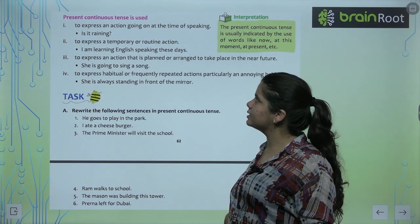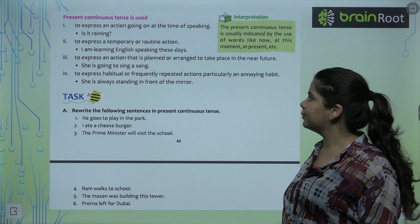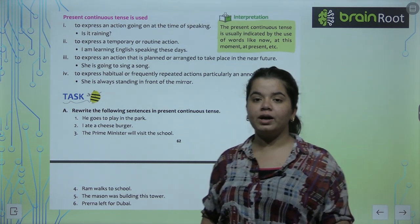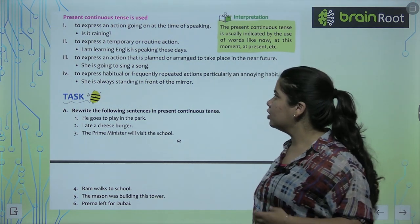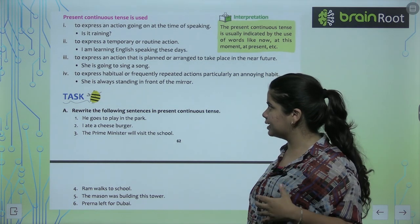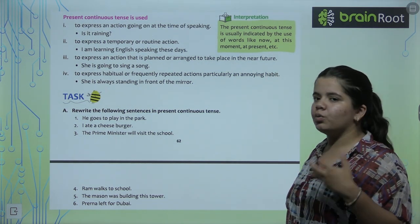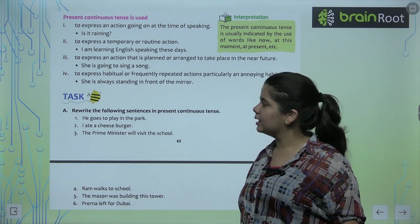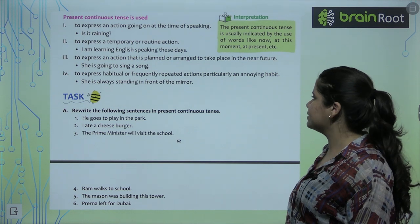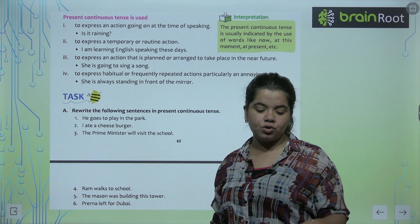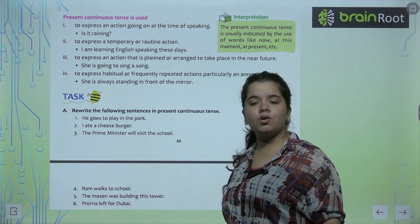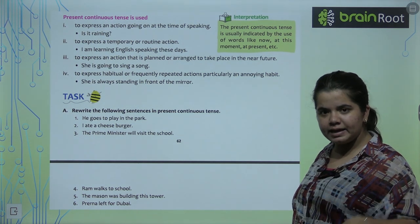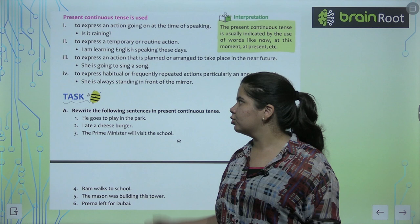To express a temporary routine action. First of all, what we express in continuous tense when we are talking, we are also talking about things. Second, there is something that is continuously going on many days, it is a routine action. Like we study every day. I am learning English speaking these days. To express an action that is planned or arranged to take place in the near future. This is something that is going to be very quickly. So that is what we tell in present continuous. Like she is going to sing a song. It is going to be a little later. So then we use present continuous.